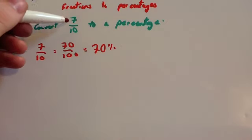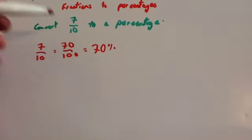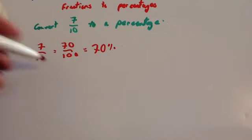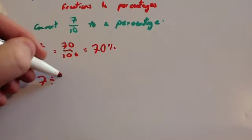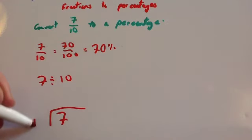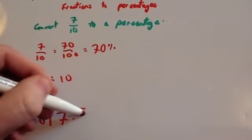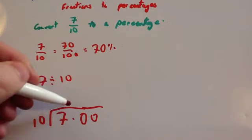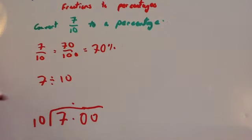The second method is to divide the top by the bottom to get it as a decimal, then times it by 100 to get a percentage. So we do 7 divided by 10, use the bus shelter method for that. Remember, the number you're dividing goes under the bus shelter. Put a decimal point in some zeros and extend the line, and put a decimal point above the decimal point.